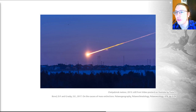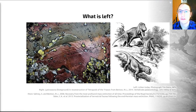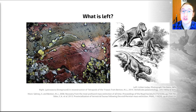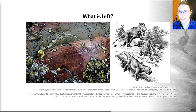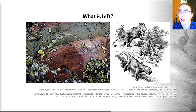A key question is: once you've had an extinction, what is left? We can identify some general patterns. Survivors tend to be generalists, and species with wide geographic distributions tend to do better than those with narrow ones. This is both because species with wide distributions are less likely to be wiped out by a single event, and because generalists are better able to cope in the post-extinction world.